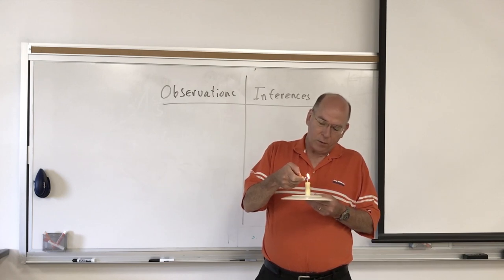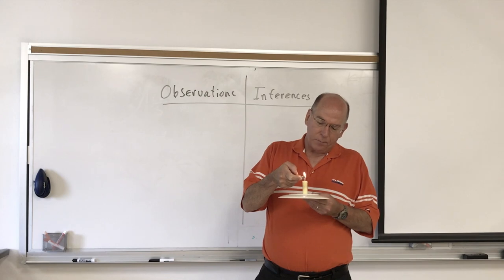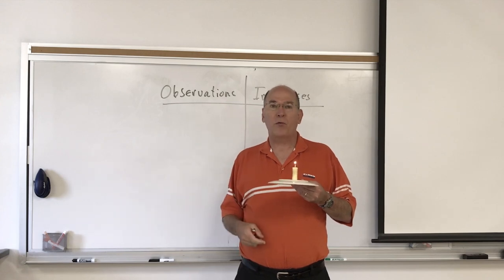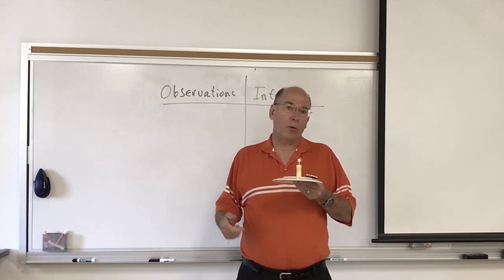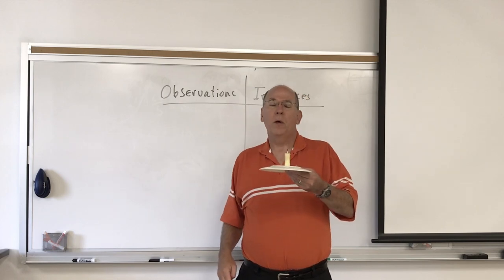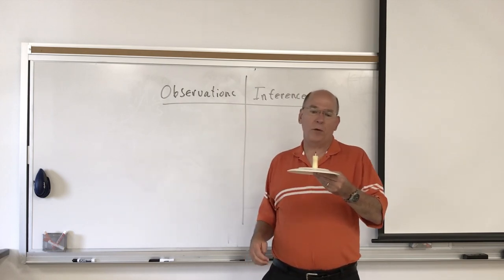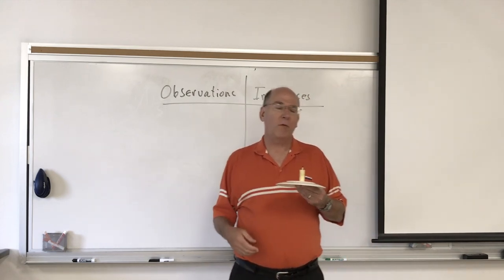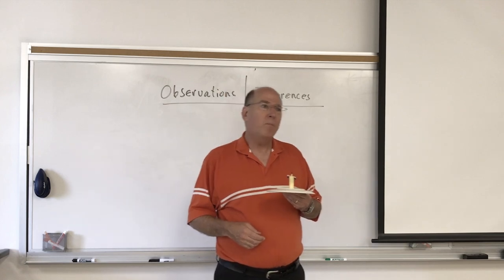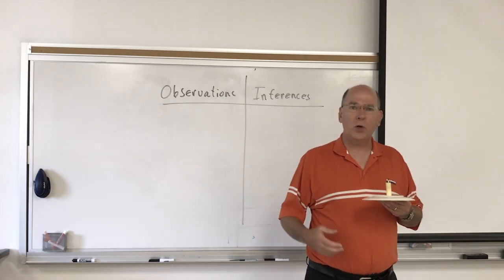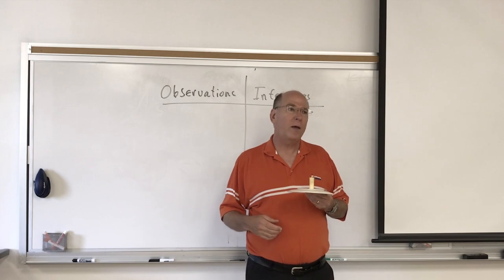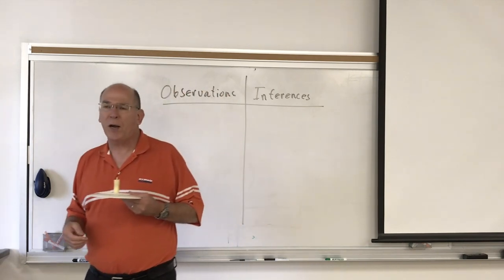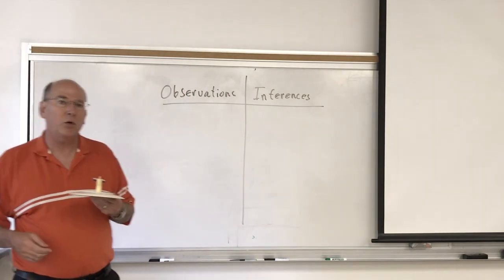Now that we've done this experiment, we've collected some more data, so you could write down at least one more observation. People sitting near might get an observation from their sense of smell, but most of us are just getting information from our sense of sight. Now you're probably ready to draw your conclusion — you probably knew right away the identity of this object — but there's one more experiment, one more piece of data you need to see to check if it agrees with your conclusion.